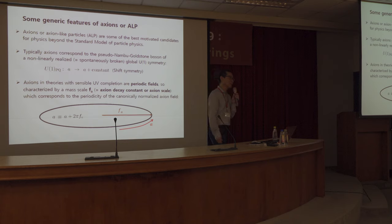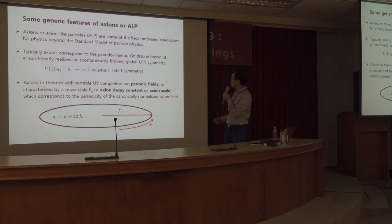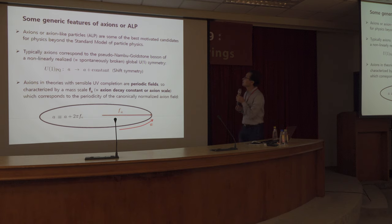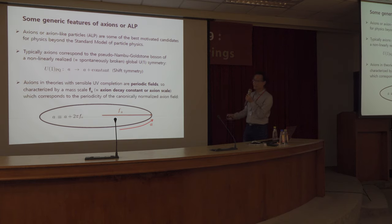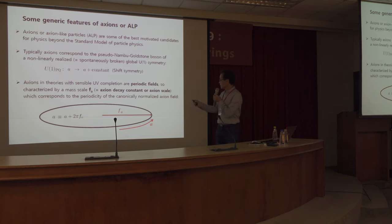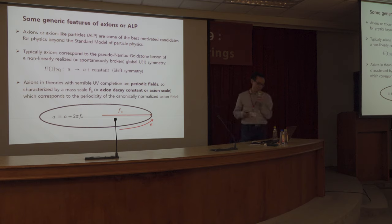I hope many of you agree that axions or axion-like particles are some of the best motivated candidates for physics beyond the Standard Model. Typically, axions correspond to the pseudo-Nambu-Goldstone boson — the simplest kind of nonlinear realization of a symmetry, just a U(1) global symmetry which I will call U(1)_PQ or simply shift symmetry. Under this symmetry, the axion field experiences just a constant shift.